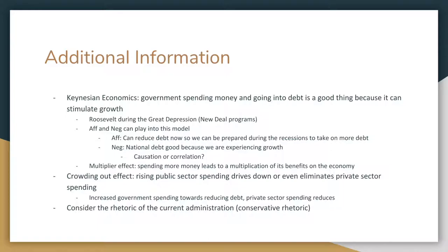Both AFF and NEG can play into the Keynesian model, but be wary of it for NEG. AFF can argue that you reduce the debt now so you're prepared for recessions — so when a recession hits in the next 10 or 20 years, you can take on more debt to stimulate the economy much like during the Great Depression. For NEG, you can argue national debt is good because we are experiencing growth, but be careful — this is a matter of causation versus correlation. You don't necessarily know if national debt is the sole reason we're experiencing growth, or if it's just another factor coincidentally present.